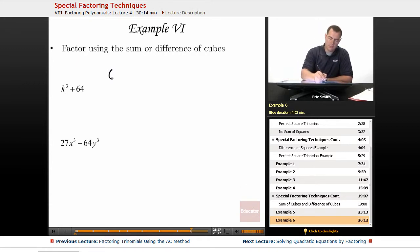So we need to recognize for this first one, something cubed plus something cubed. Well, k cubed looks like my first one, and what cube would give me 64? That would have to be 4.